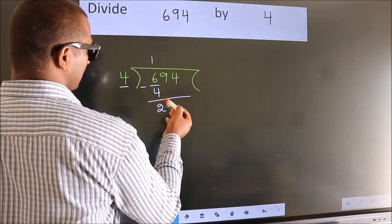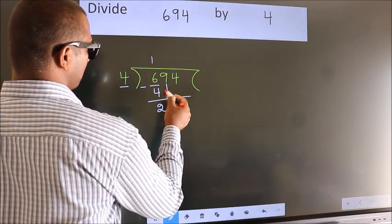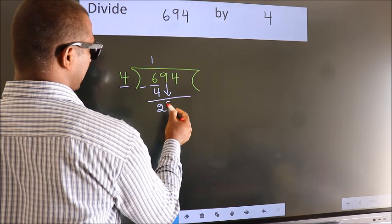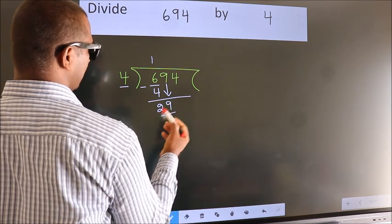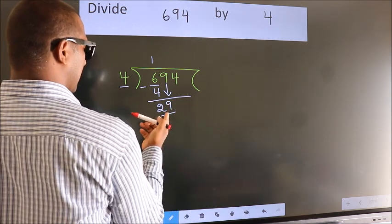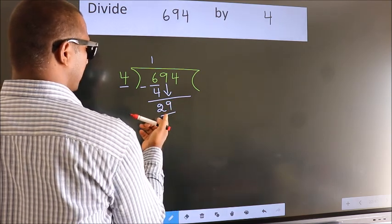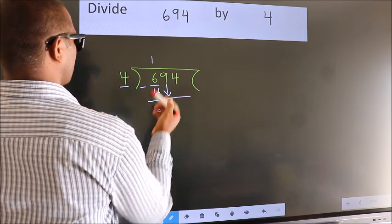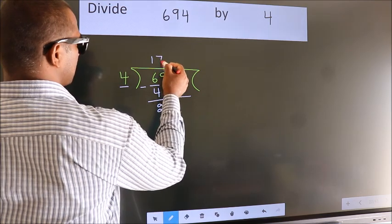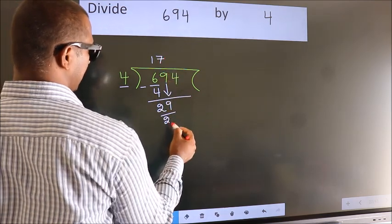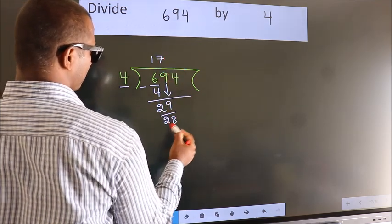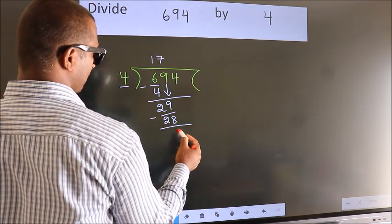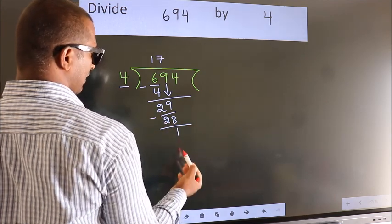After this, bring down the beside number, so 9 down, so 29. A number close to 29 in the 4 times table is 4 sevens 28. Now we subtract, we get 1.